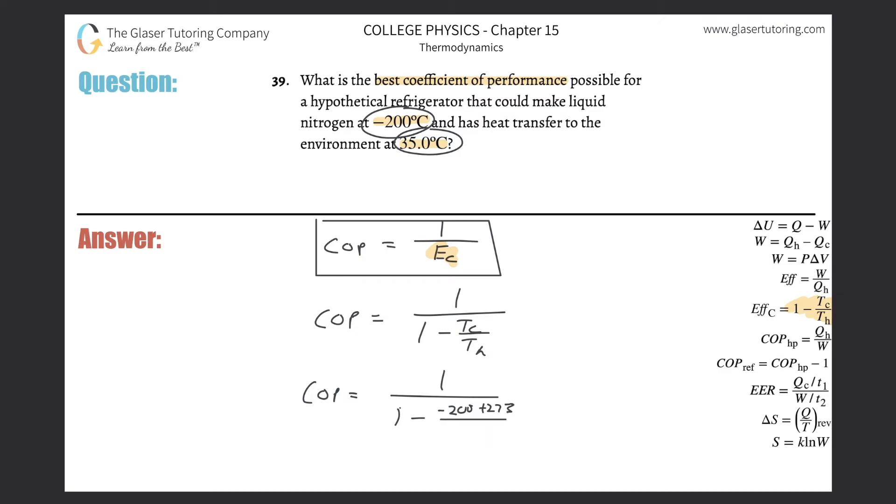Divide that by 35 plus 273, and voila, calculator time. So I'm going to find the complex denominator portion: negative 200 plus 273 divided by 35 plus 273.